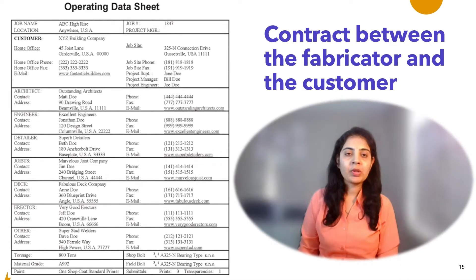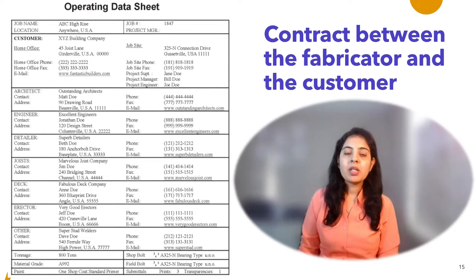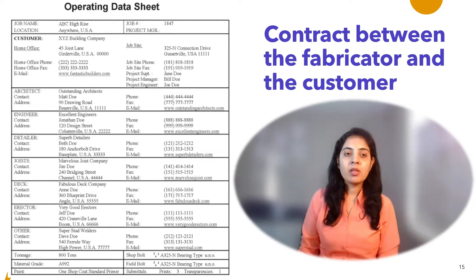In most shops the sales department prepares an operating data sheet, sometimes referred to as a job data sheet, production order, or contract memorandum, similar to the form illustrated in the figure. The arrangement and presentation of an operating data sheet will vary depending on the preference of the fabricator. The data usually includes basic information such as project name, customer, owner, structural engineer of record, architect, contract design drawings, contract specifications, location, and job number.